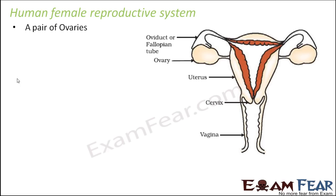A pair of ovaries. Ovaries are the primary organ of the female reproductive system. They are primary because they produce the female gametes. So the female gametes are produced inside the ovary.